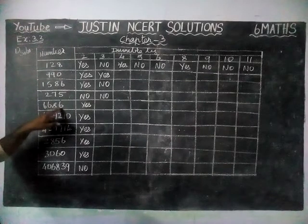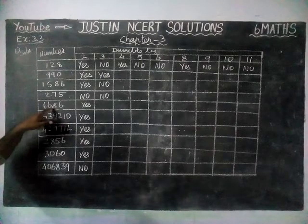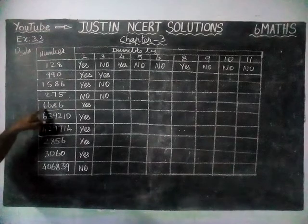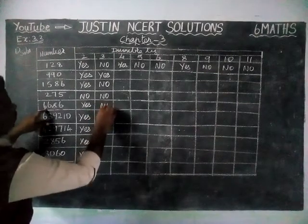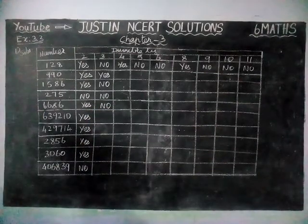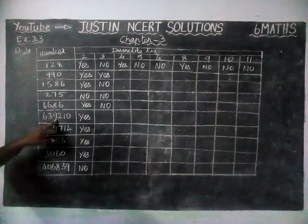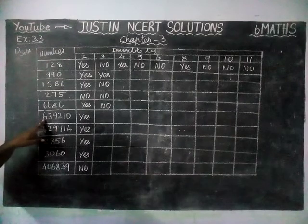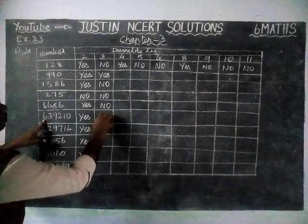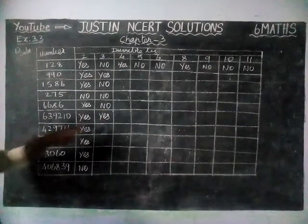Now checking: 6 plus 8 is 14, 14 plus 6 is 20, 20 plus 6 is 26. 26 is not divisible by 3, so this number is not divisible by 3. Next: 2 plus 1 is 3, 3 plus 9 is 12, 12 plus 3 is 15, 15 plus 6 is 21. 21 is divisible by 3 — 7 threes are 21 — so that number is divisible by 3.